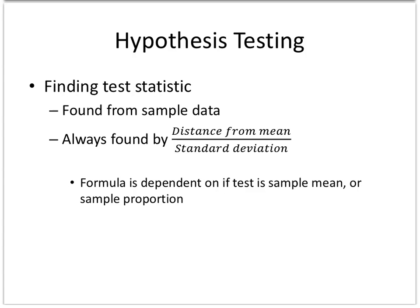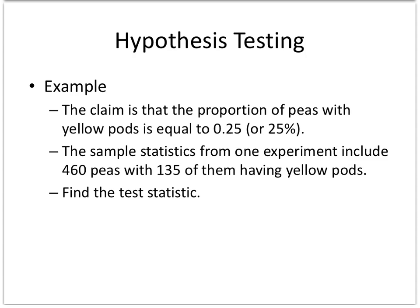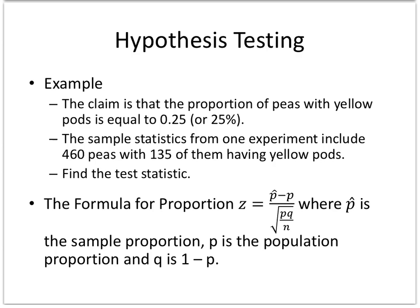Of course, this formula is dependent on if it's testing a sample mean or a proportion. So the claim is that the proportion—so right there tells you you're going to use your formula sheet and look for the proportion test statistic—of peas with yellow pods is equal to 0.25 or 25 percent. The sample statistics from one experiment includes 460 peas with 135 of them having yellow pods.